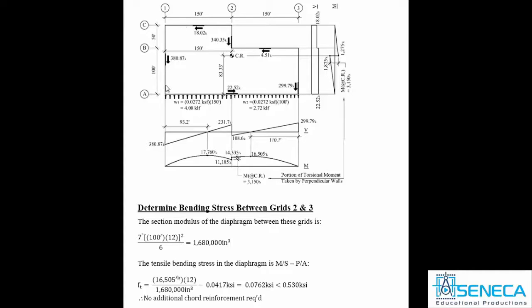Now, if this were not a pre-stressed post-tensioned concrete diaphragm, the designer would approach this by looking at the bending moments, typically dividing by 0.95 times the depth of the diaphragm to come up with a tension-compression couple, and with that T-force, equate it to an area of steel required for chord reinforcement placed along the edge.